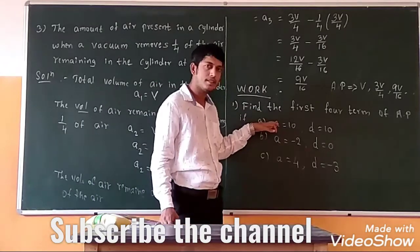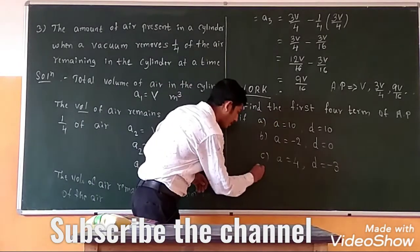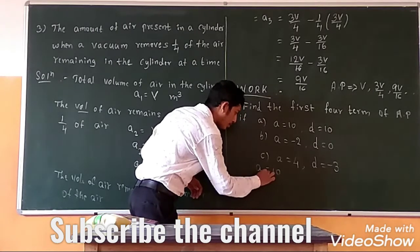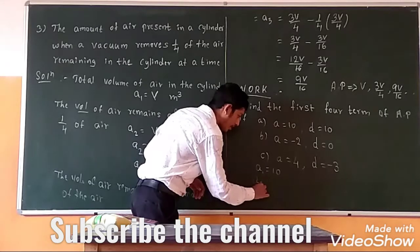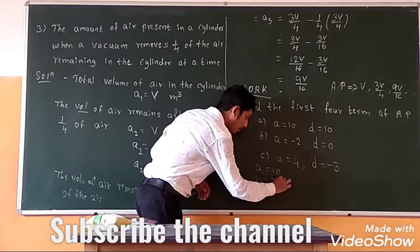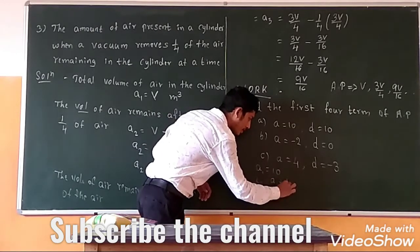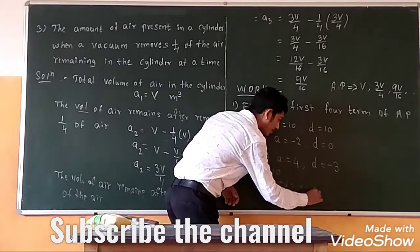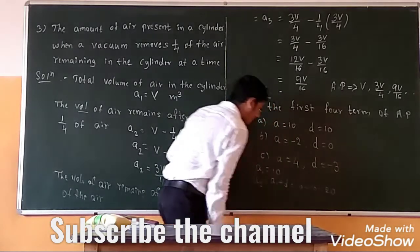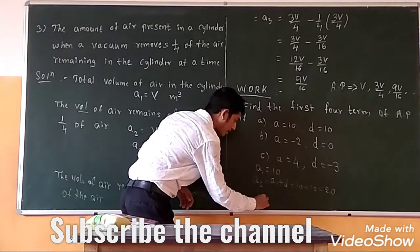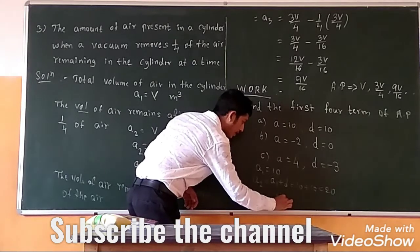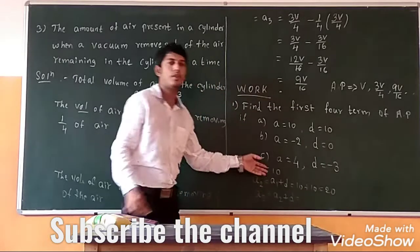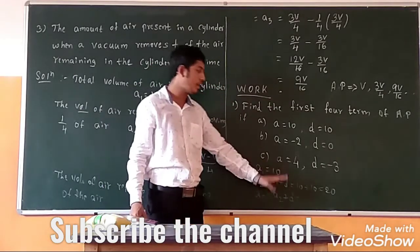So A1 is the first term, which is 10. The second term A2 equals A1 plus d, which is 10 plus 10, equals 20. A3 equals A2 plus d, and we continue this process. We have to write the answers for all three problems with their common differences.